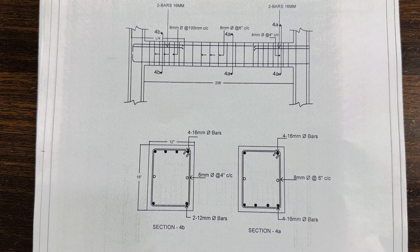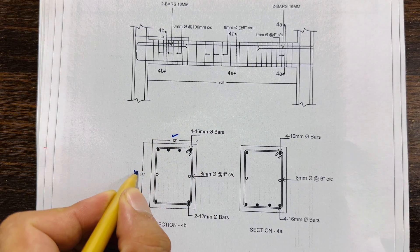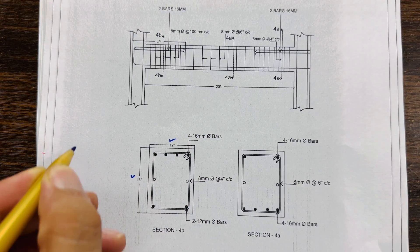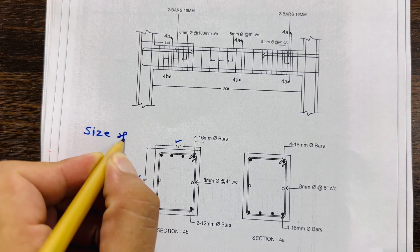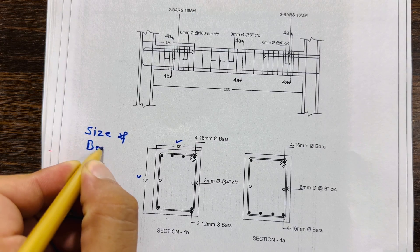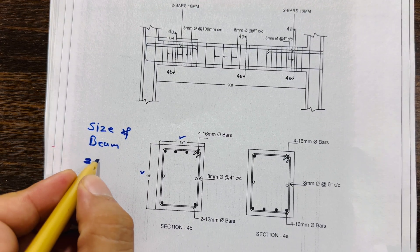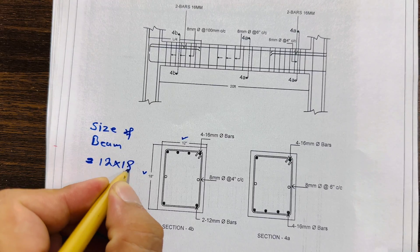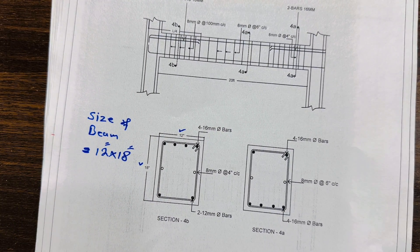This beam is specially designed for a three-story commercial building. The width is 12 inches and the depth is 18 inches, so the size of the beam is 12 by 18 inches — width 12 inches, depth 18 inches.